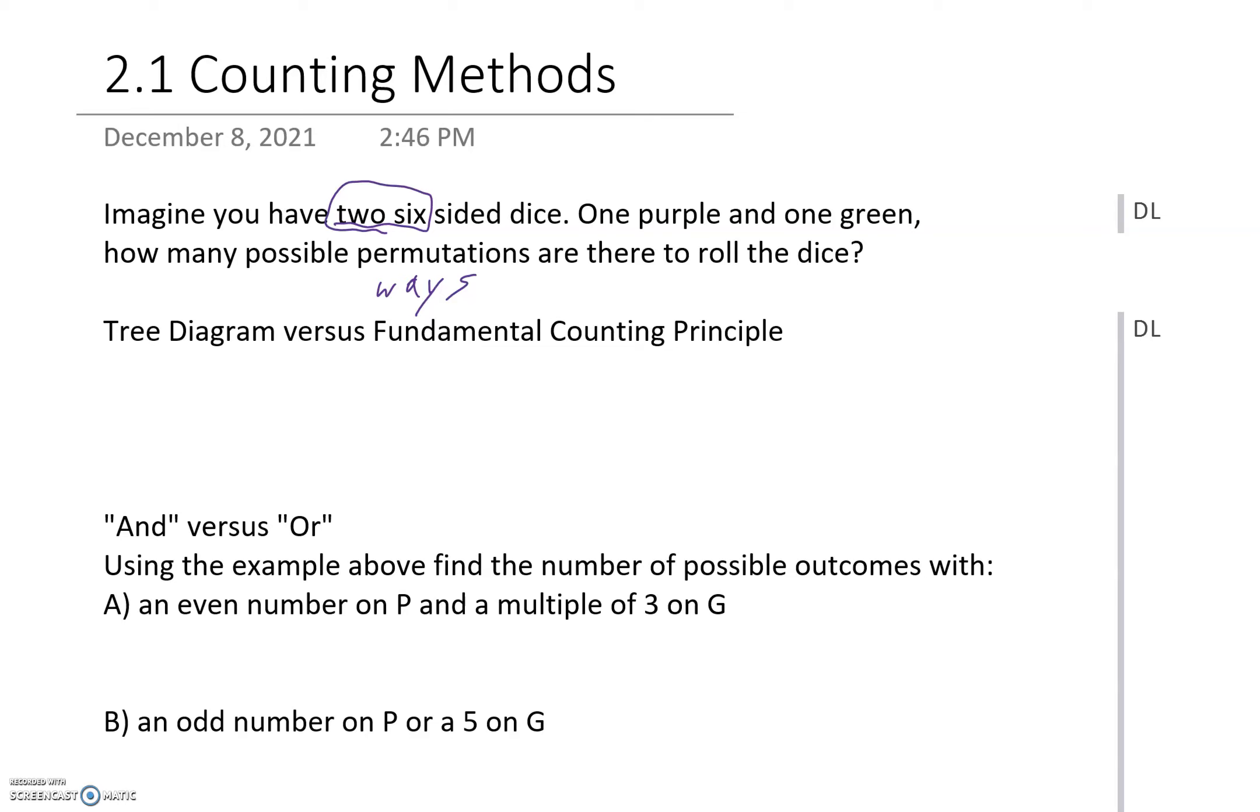So tree diagram versus fundamental counting principle. There are two six-sided dice. We're going to say one is purple, so here's our purple one, and we have one green one. So how many possible ways can we roll the dice? Well, the purple one we can roll it one of six ways. We can roll one, roll a two, roll a three, a four, five, and a six.